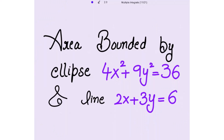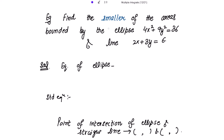We have to find the smaller of the areas bounded by the ellipse 4x² + 9y² = 36 and the line 2x + 3y = 6. The equation of the ellipse can be rewritten as x²/9 + y²/4 = 1. The standard form is (x−h)²/a² + (y−k)²/b² = 1, where h and k are 0.